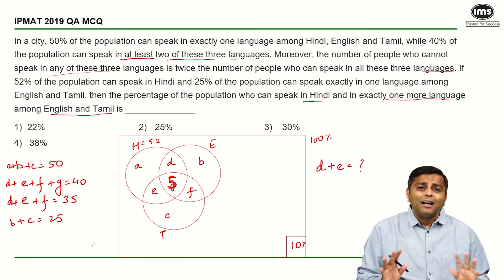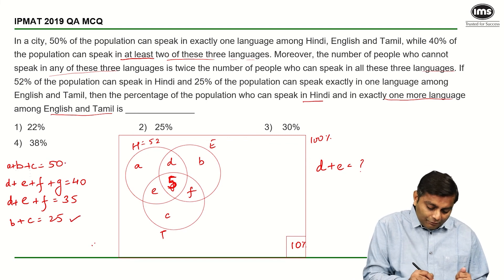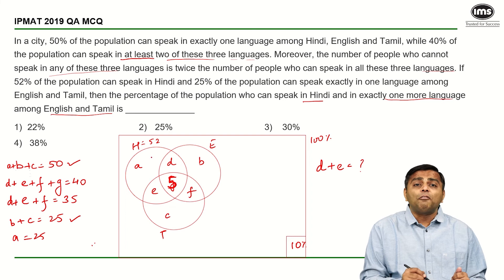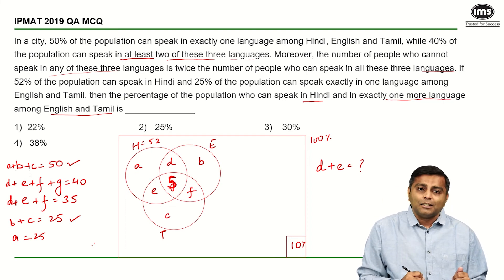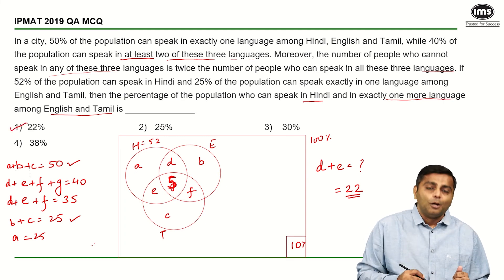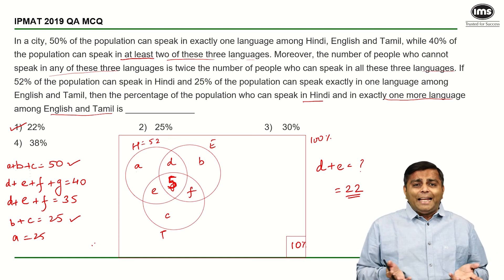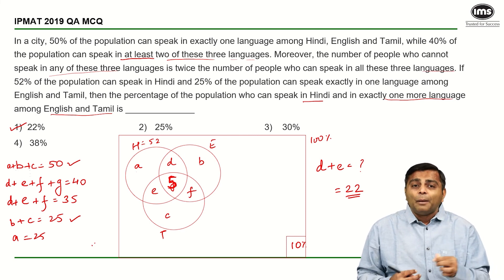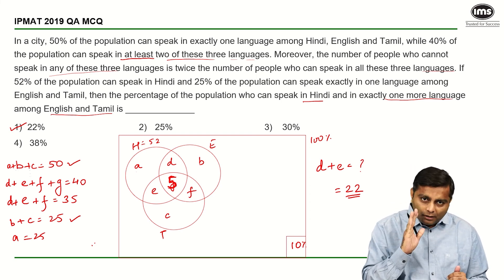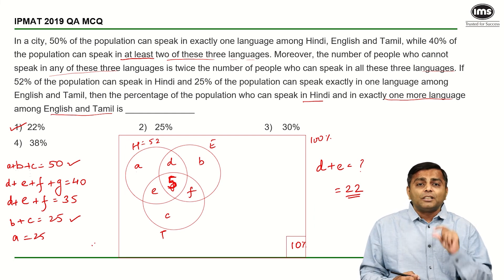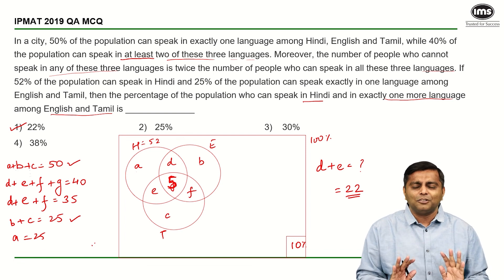Now it's pure algebra. From B plus C equals 25 and A plus B plus C equals 50, we can figure out that A is 25. Looking at the Hindi circle total of 52: A is 25 and the middle value G is 5, so 25 plus 5 is 30, and therefore 52 minus 30 gives D plus E equal to 22. The most crucial aspect of this question is accurately translating the English language into the regions of the Venn diagram — after that, it's pure algebra and not difficult from a calculation perspective.